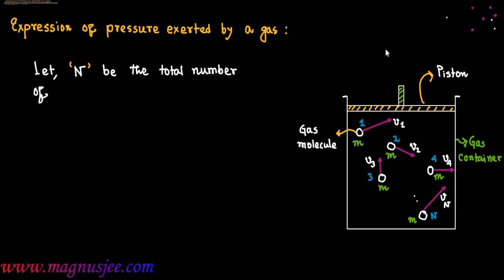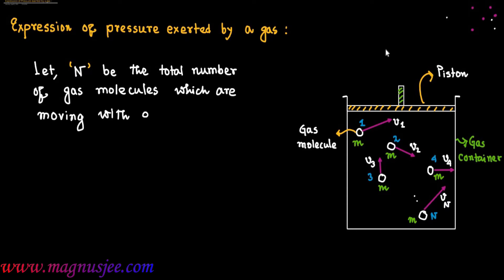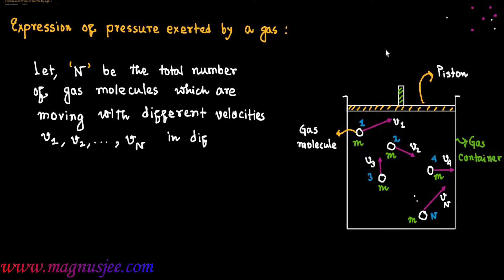Let n be the total number of gas molecules, which are moving with different velocities V1, V2, ... Vn in different directions.